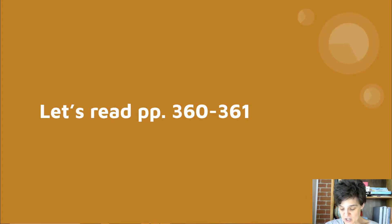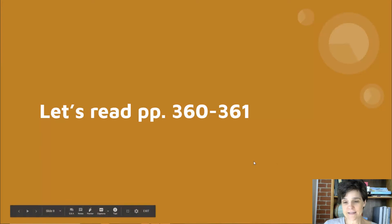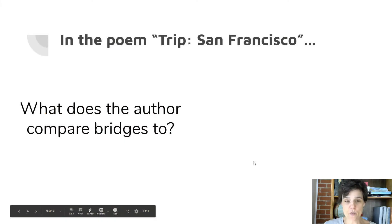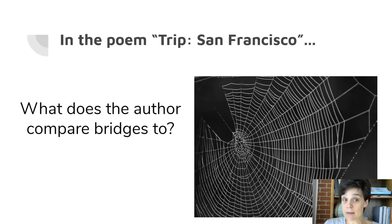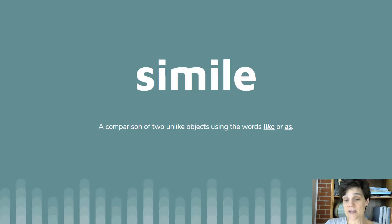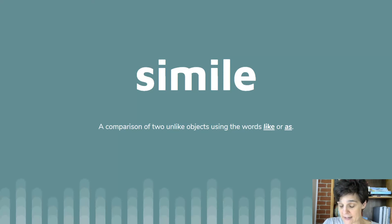So in that poem 'Trip,' the author compares bridges to cobwebs. That is a simile — a comparison of two unlike objects using the words 'like' or 'as.' All right, let's take your work text out. We have two pages to do.